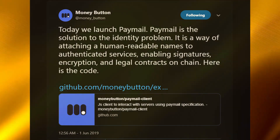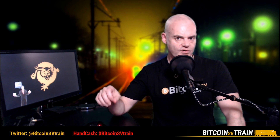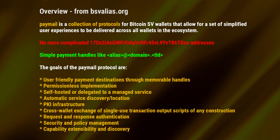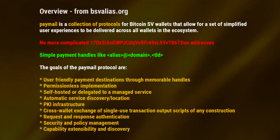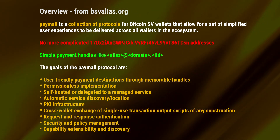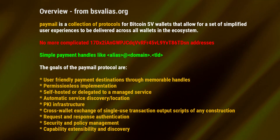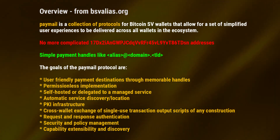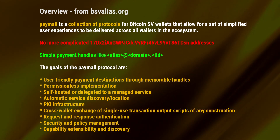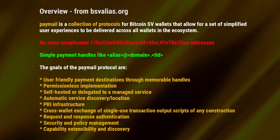There was some confusion over what a paymail ID actually is — if you register a name with a service, what does it actually do and what do you get for it? Over at BSValias.org, the devs describe paymail as a collection of protocols for Bitcoin SV wallets that allow for a set of simplified user experiences to be delivered across all wallets in the ecosystem. The goals include user-friendly payment destinations through memorable handles, permissionless implementation, self-hosted or delegated to a managed service, automatic service discovery, PKI (public key infrastructure), cross-wallet exchange of single-use transaction output scripts, request and response authentication, security and policy management, and capability extensibility and discovery.